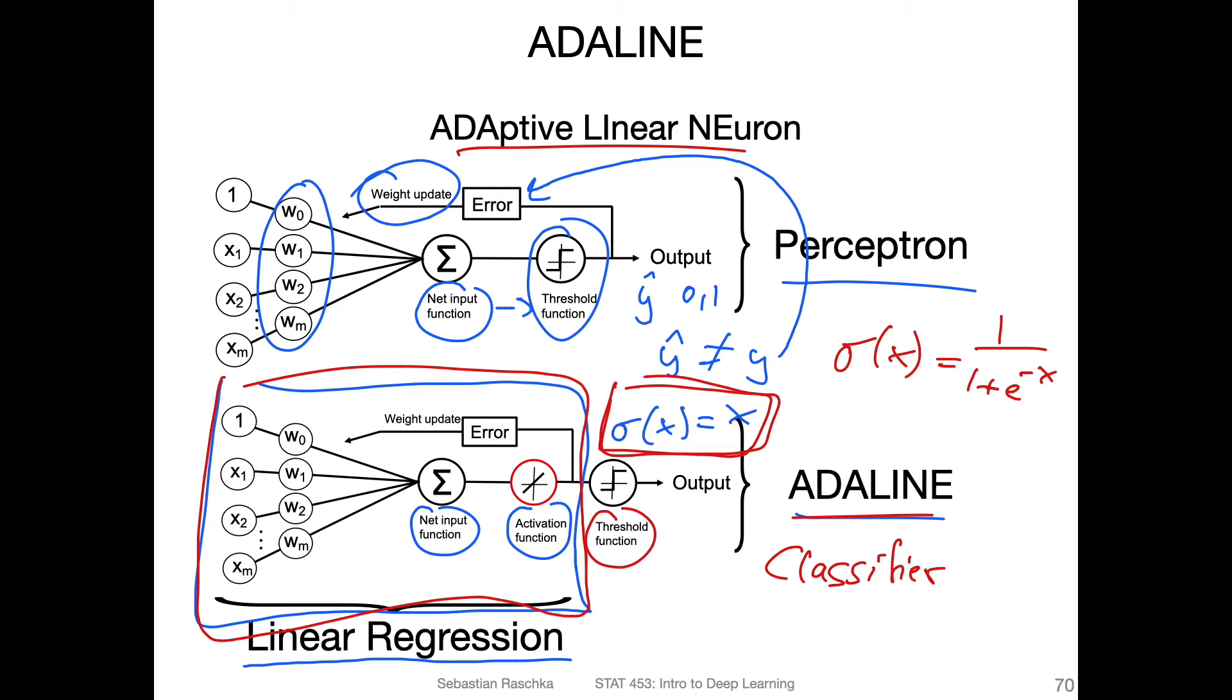However, note the difference here really between the perceptron and the ADALINE is where we compute the error. For the perceptron, we compute the error after the threshold function. And in the ADALINE, we compute the error before the threshold function.